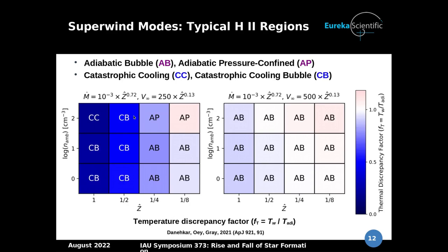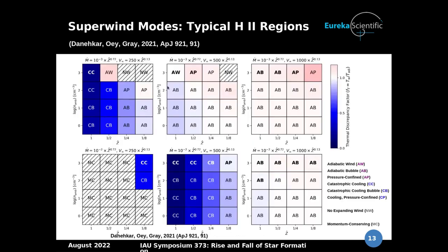Using these criteria we classify different wind regions in the parameter space of mass loading rate, wind thermal velocity, metallicity, and ambient density. By increasing metallicity we increase radiative cooling, and by decreasing wind thermal velocity we also increase radiative cooling. By increasing the mass loading rate, the chance of radiative cooling increases. There is also a parameter range in the lower right — MC, momentum-conserving winds — where we have momentum-driven outflow formed by very strong radiative cooling, and the formation of a bubble and shell is totally suppressed.